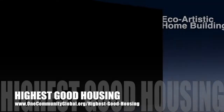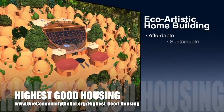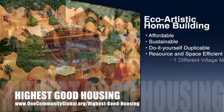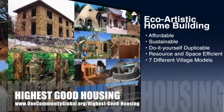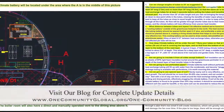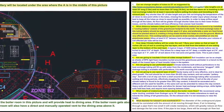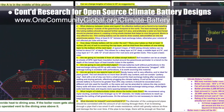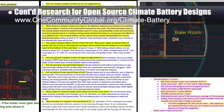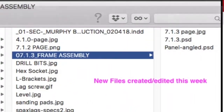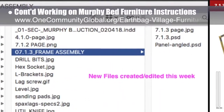One Community's approach to highest good housing is eco-artistic home building that is affordable, sustainable, do-it-yourself, duplicable, resource and space efficient, and consists of seven different sustainably constructed village models. This week the core team — which includes pioneer members plus those helping who don't wish to be individually acknowledged — continued research needed for the next generation of the open source climate battery designs. What you see here are a snapshot of some of the details we're researching.